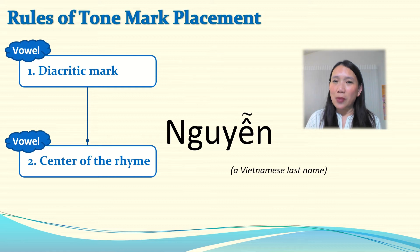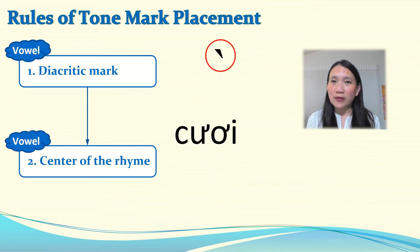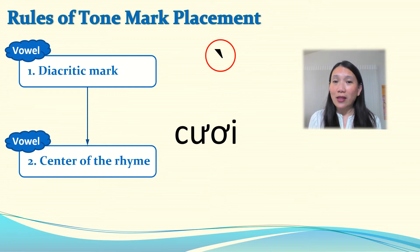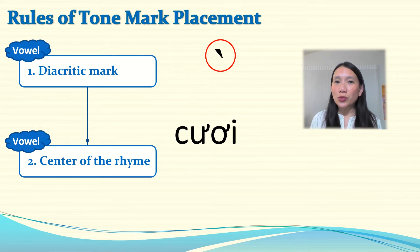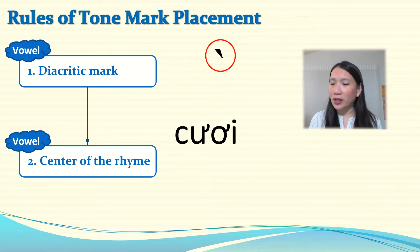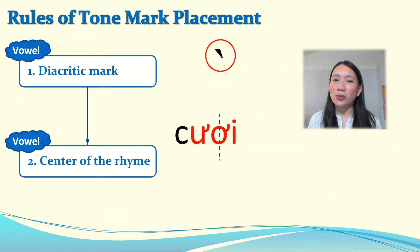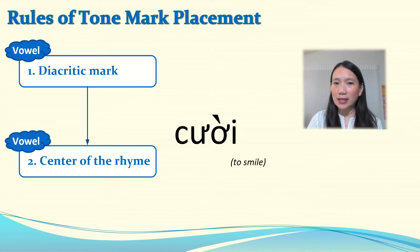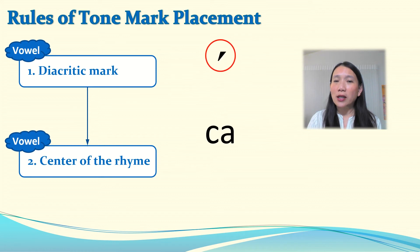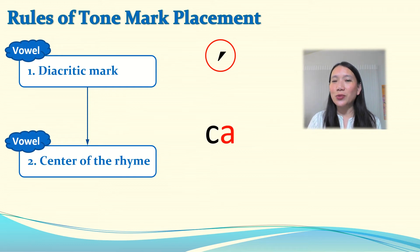Second example: always ask the first question — is there any vowel with a head or whisker? Yes, but there are two of them, not one. Because there are two, the second rule now applies. We find the rhyme and find the center of the rhyme — that is where the tone mark is placed. Next example: is there any head or whisker? No. Second rule applies. Where is the rhyme? There it is — that is where the tone mark is placed.